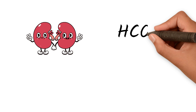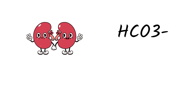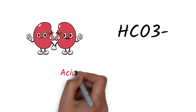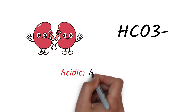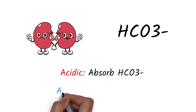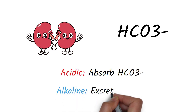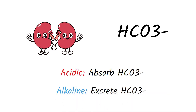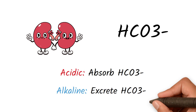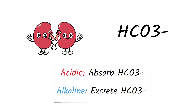Our kidneys regulate the blood pH level by altering the concentration of bicarbonate ions in the blood. If the pH becomes too acidic, the kidneys absorb bicarbonate. Similarly, if the pH becomes too alkaline, the kidneys excrete more bicarbonate to bring the pH down to normal. This can lead to metabolic acidosis or alkalosis.